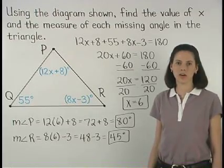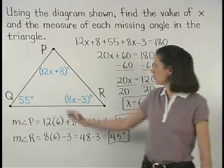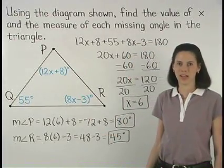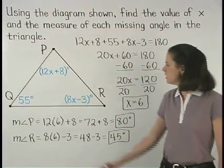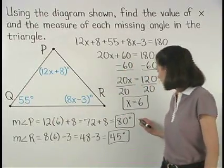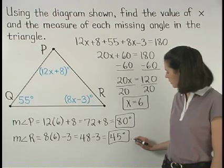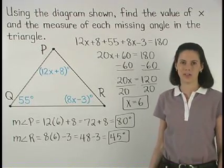Finally, we can check our answer by making sure that the three angles of the triangle add to 180 degrees. 55 plus 80 is 135 plus 45 is 180. So our answer checks.